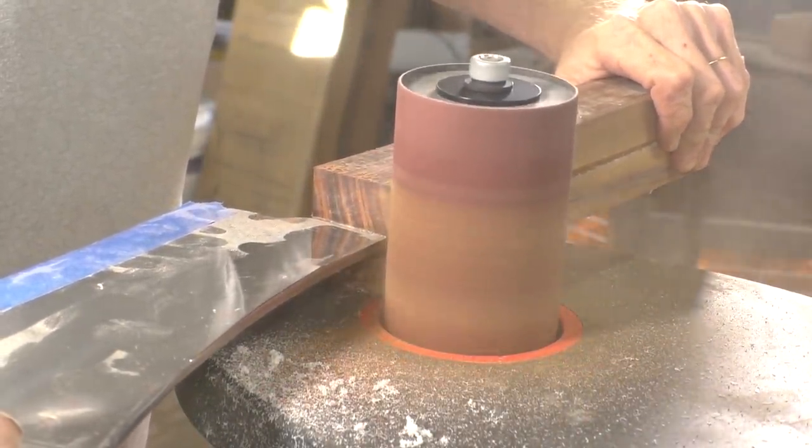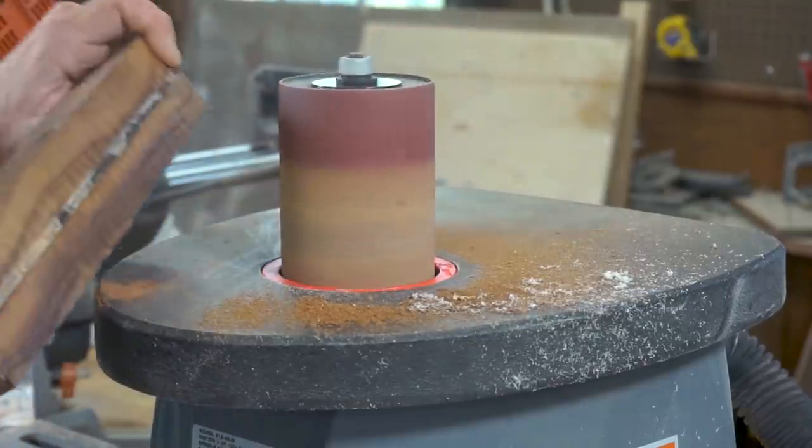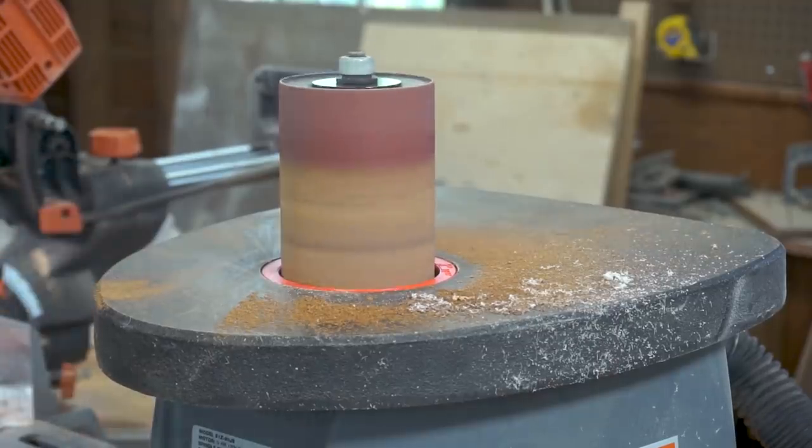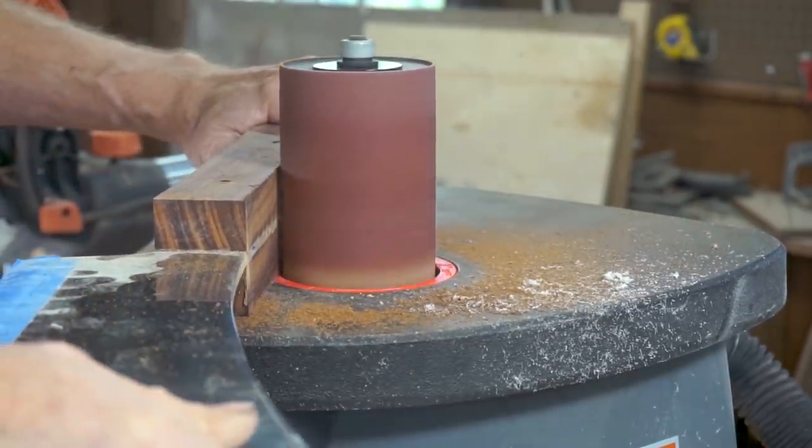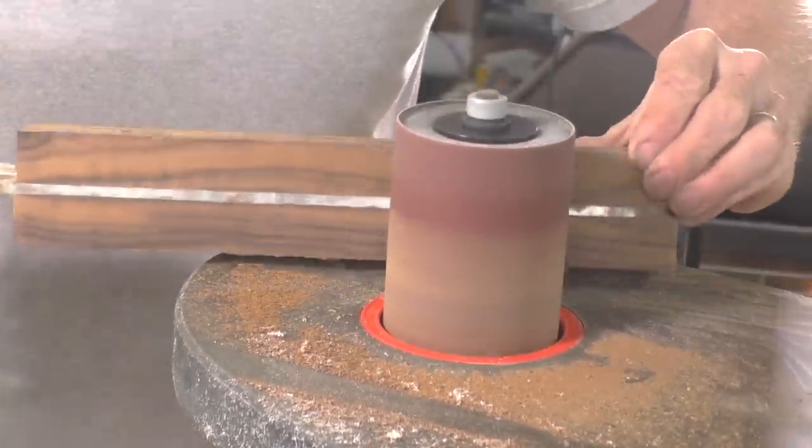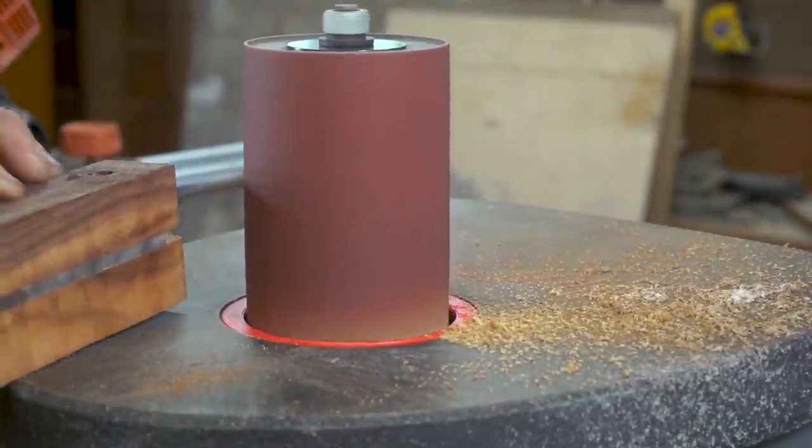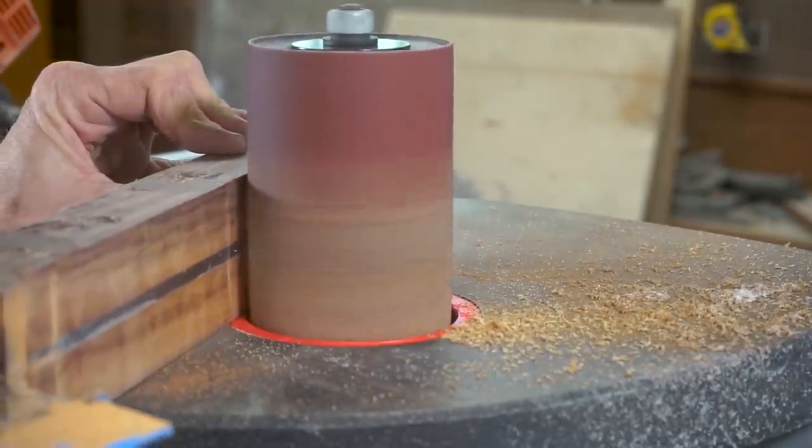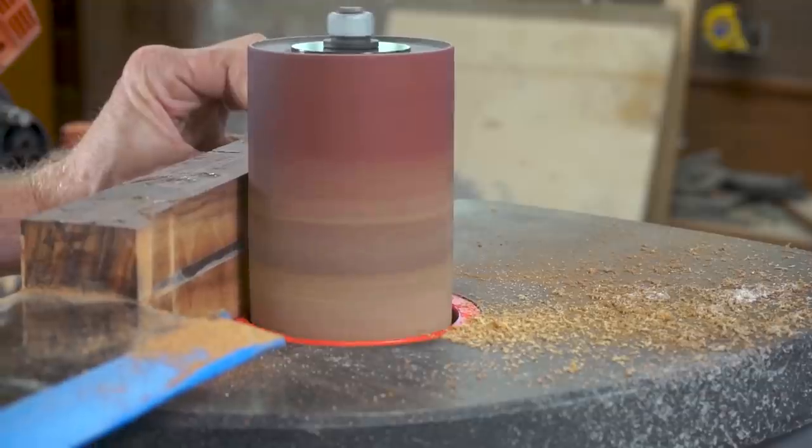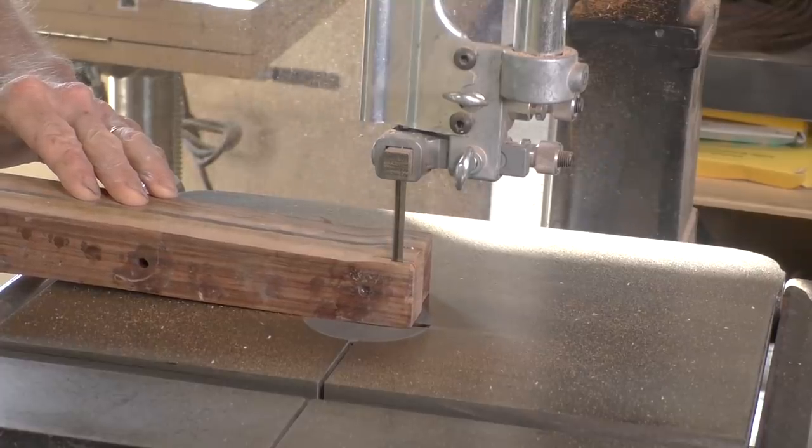Now I will use my oscillating spindle sander to shape the handle. I use this rubber abrasive cleaner to keep the sandpaper clean. To save time on the spindle sander, I'm going to use my bandsaw to cut off some of the excess rosewood.